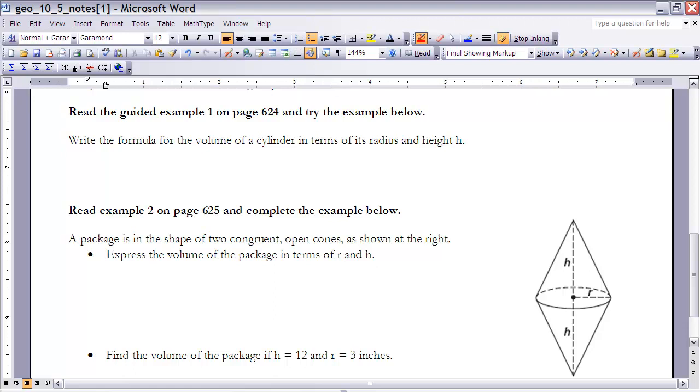To do that, I'm going to start with the general formula. The general formula is volume is equal to the area of the base times the height. Well, we want it in terms of the radius and the height. Well, I already have height in my formula, so really all I need to do is get rid of the base and find it in terms of the radius.